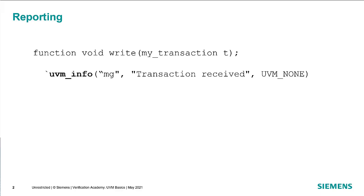UVM includes a built-in messaging system to allow you to specify messages of a particular severity so that you can see better what's going on inside of your system. In its simplest form, it's simply a call to a function to display a message. In this particular case, we're using a macro, as the macros provide some additional information about where the function was actually called. The severity is specified by the macro that we call — in this case, info for an informational message.